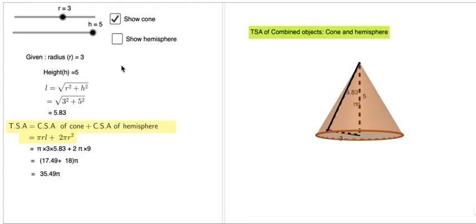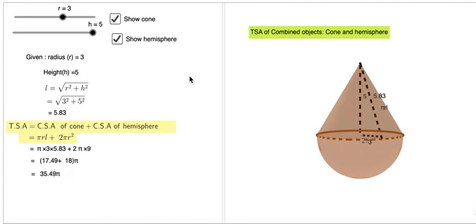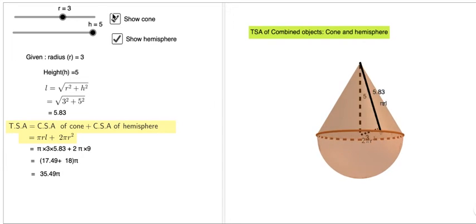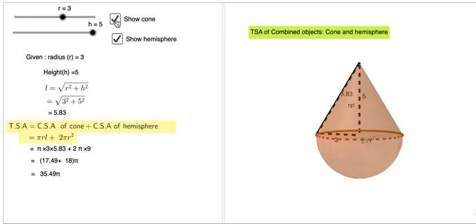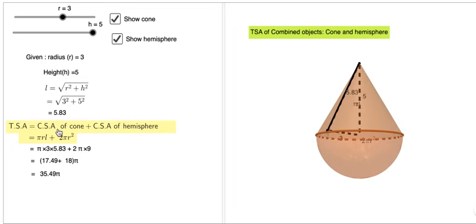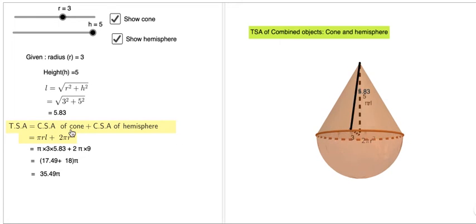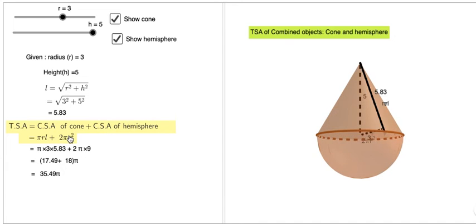Now you have to include a hemisphere to this object, so the combined object is the cone and hemisphere. The surface area of the hemisphere is 2πr² and the surface area of the cone is πrl. Therefore, the total surface area of this combined object equals the curved surface area of the cone plus the curved surface area of the hemisphere, which is πrl + 2πr².